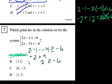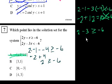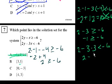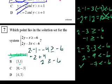Let's try the second point, (3, 1). y is 1. For the first inequality: 2 times 1 is 2, minus 3. Is -1 greater than or equal to -6? Yes, definitely. Now the second inequality: 2 times 1 is 2, minus 3 times 3. Is 2 - 9 less than -6? You get -7, which is less than -6. That is true. So choice B works — that point lies in the solution set, meaning it satisfies both inequalities.